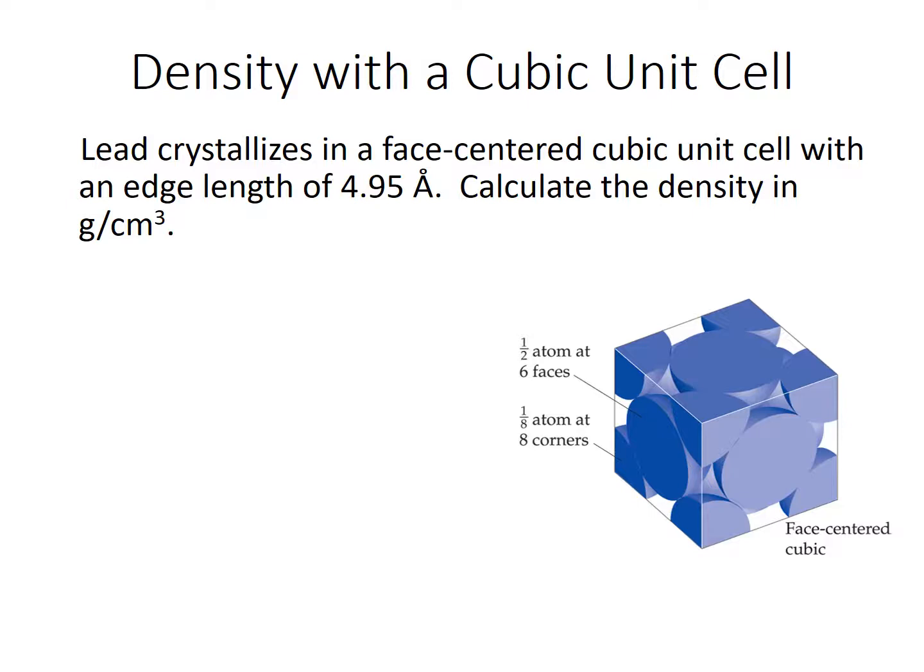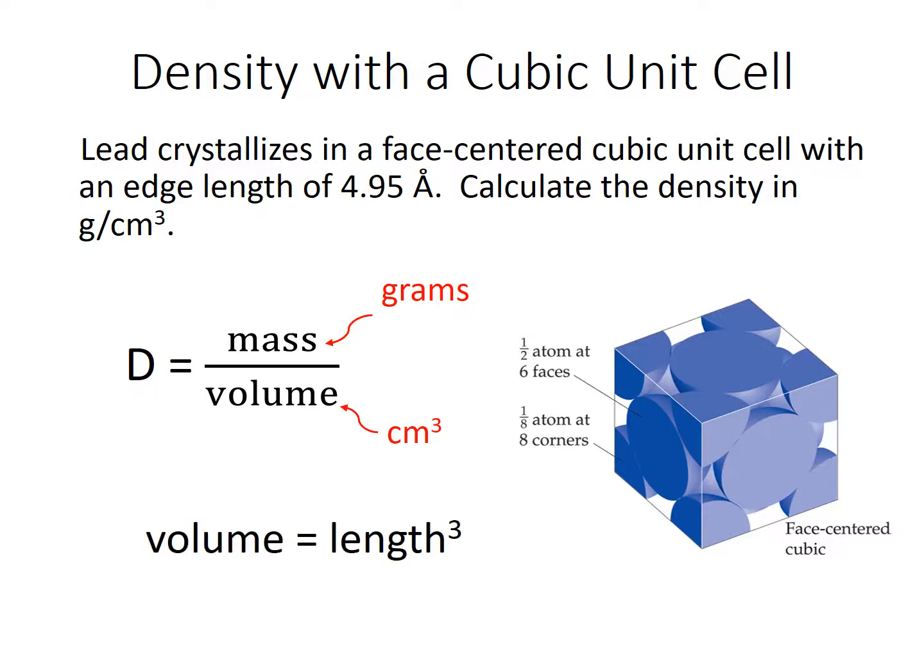Okay, so do you remember what density is? We remember that density is defined as mass per unit volume, and think about the units of mass and volume that we're looking for. The mass needs to be in grams, and the volume needs to be in cubic centimeters. Now how do we find the volume of a cube? Well, the cube has equal edge lengths, so volume equals length cubed.